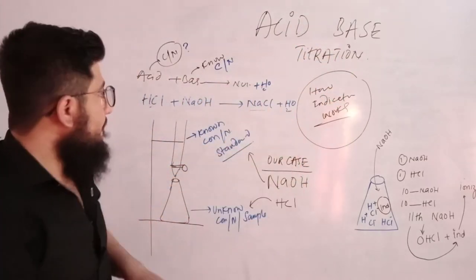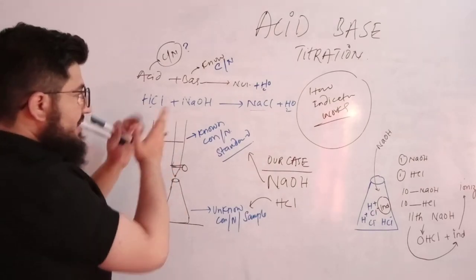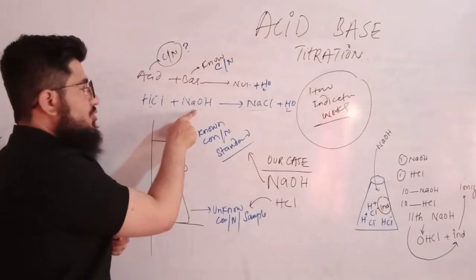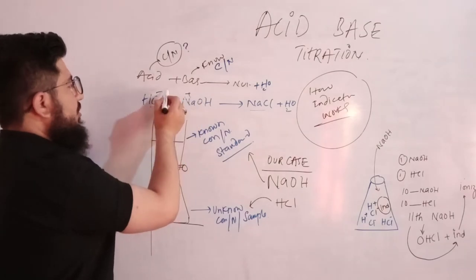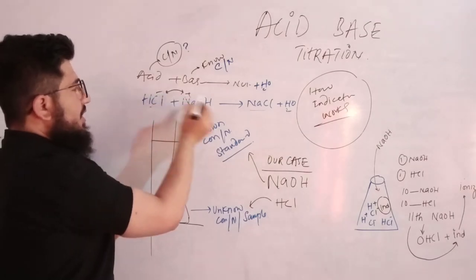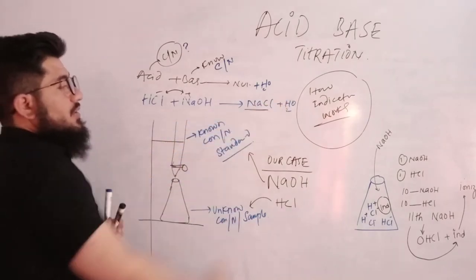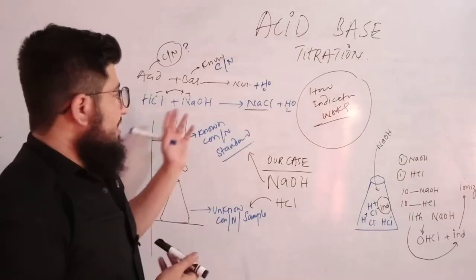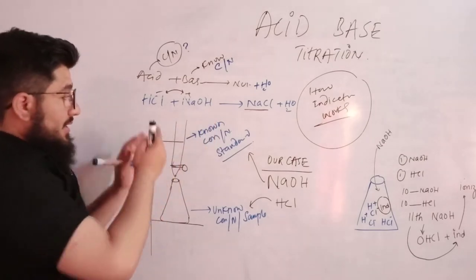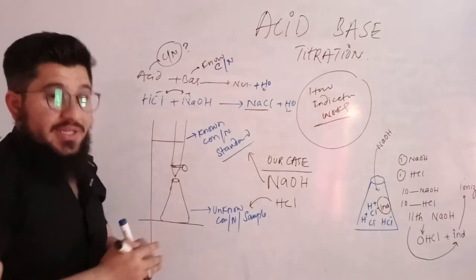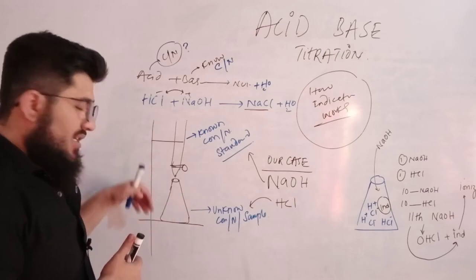Now let's go through the process of acid-base titration and come to how the indicator works at the end. We'll take HCl (hydrochloric acid) and sodium hydroxide as our example. HCl is the acid and sodium hydroxide is the base. When these two interact, we get sodium and chloride ions forming sodium chloride, and the H and OH synthesize water. This is our general reaction. For titration practically, we need a burette, conical flask, and related equipment.